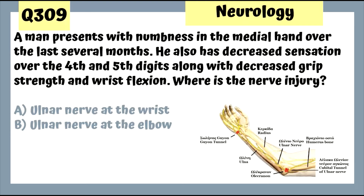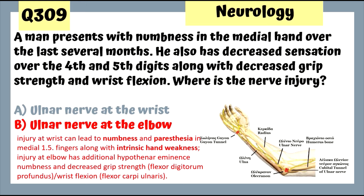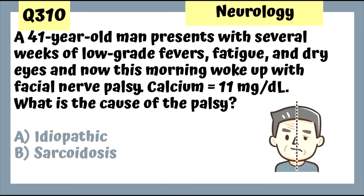Question 309: A man with numbness in the medial hand over several months, decreased sensation over the fourth and fifth digits, decreased grip strength and wrist flexion — nerve injury at the elbow. Injury at the elbow additionally causes hypothenar eminence numbness and decreased grip strength.